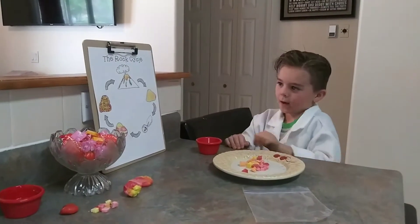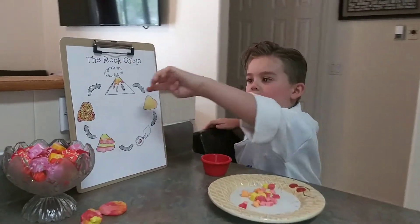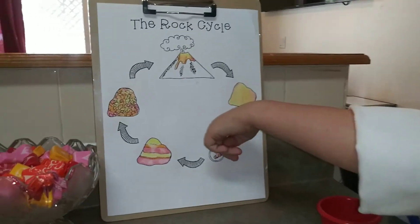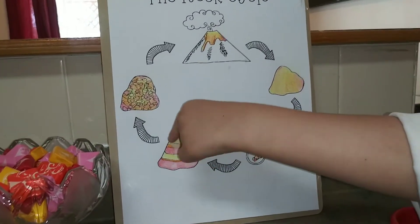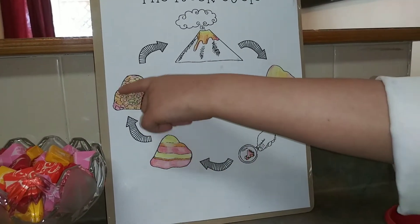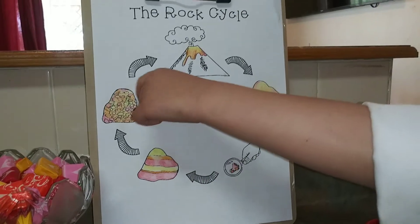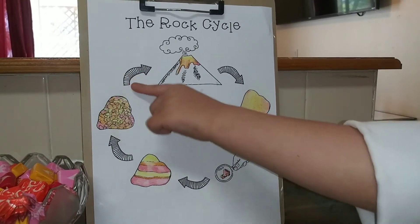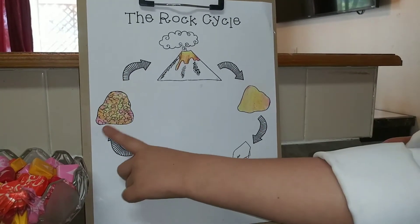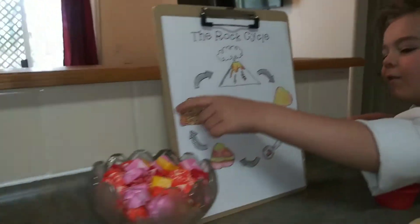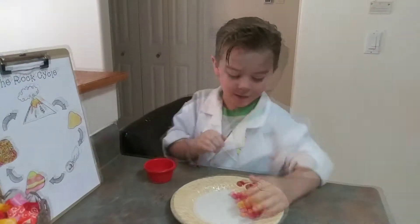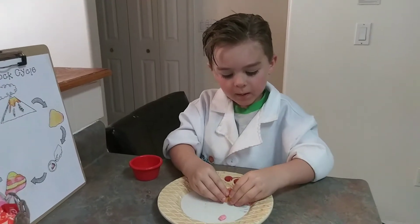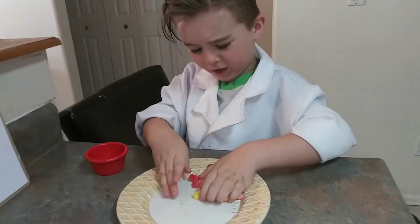Today we're going to talk about the rock cycle. Magma turns into igneous rock — this rock goes up and turns into igneous rock. Let me show you guys how to make an igneous rock.